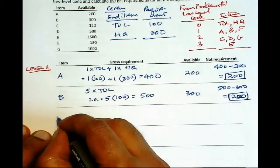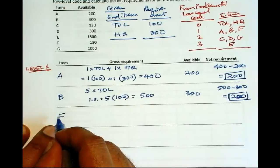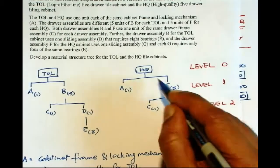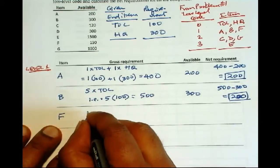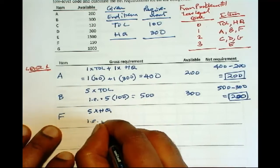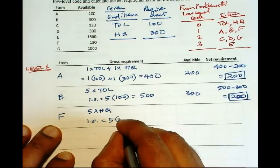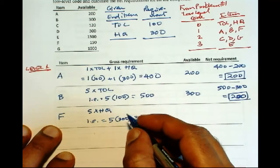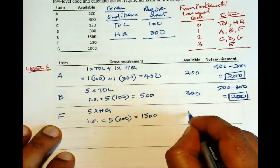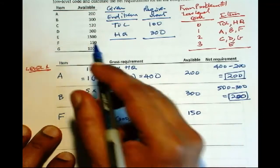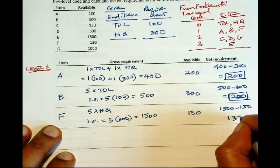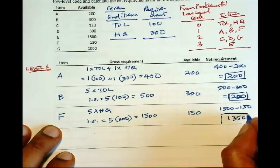And next is F, not in alphabetical order. Don't do C here. Next is F. Now F is 5 units of F for each HQ. So 5 times HQ. And that is equal to 5 times 300, so you get 1500. And we have 150 available from here. So 1500 minus 150 is 1350. So that is the net requirement for F.